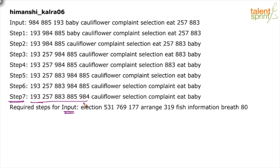The words are also together, but what is the order? C, S, C, E, B — that doesn't look like alphabetical order, and it's not reverse alphabetical either. So what is the logic? Cauliflower, selection, complaint, eat, baby. The logic here is very interesting: the words have been arranged based on the number of vowels in each word.